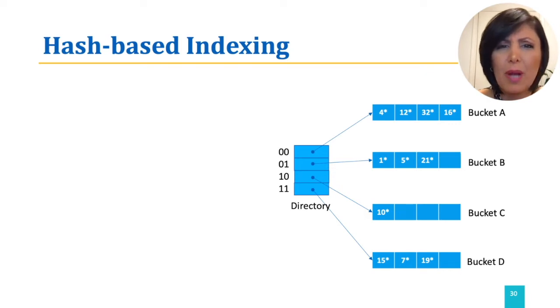But the problem with this solution is that if we double the number of buckets, the entire file should be re-read and double the number of pages should be written to achieve this doubling of the buckets. However, we can instead use a directory of pointers to buckets and double the number of buckets by doubling the directory, but only split the bucket that has overflowed.